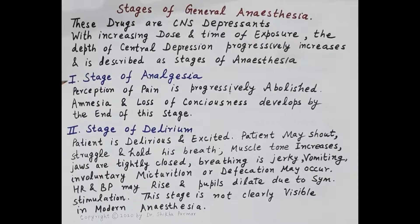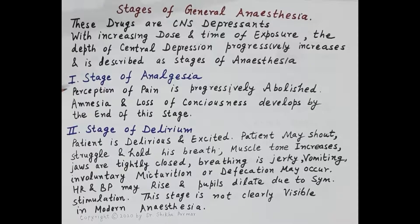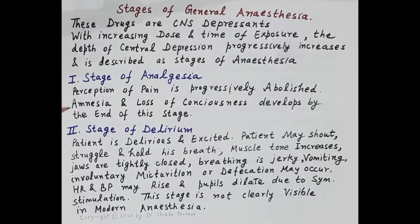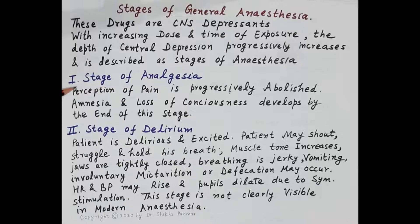The first stage is the stage of analgesia. In this stage, perception of pain is reduced and finally abolished — perception of pain is progressively abolished. Amnesia, that is loss of memory, and loss of consciousness develop by the end of this stage. So in the stage of analgesia there is loss of pain sensation, induction of amnesia, and induction of unconsciousness.